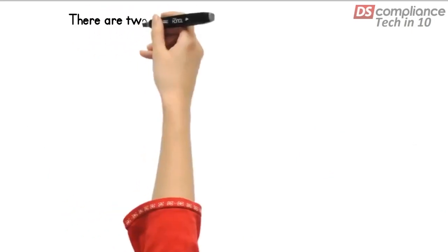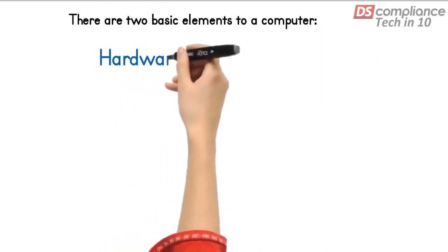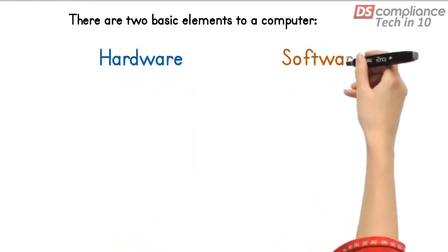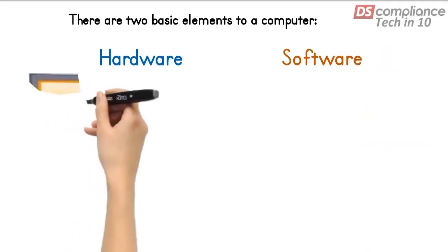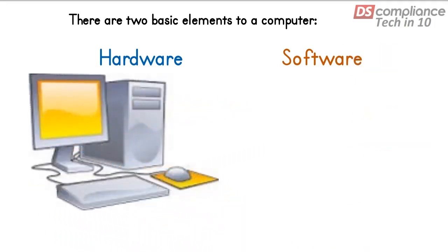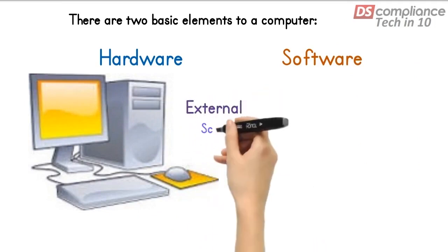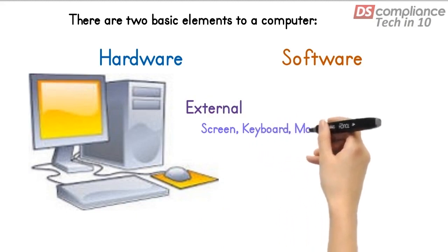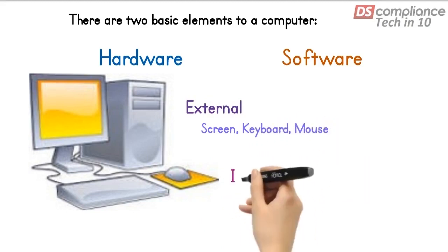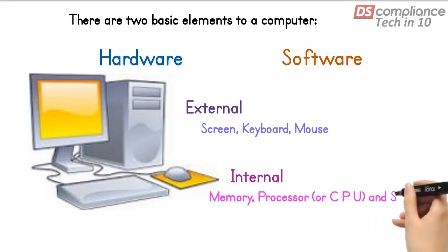A computer system consists basically of two elements in order to be able to operate: hardware and software. Let's focus on hardware for now. Hardware comprises the physical components of a computer, and these can be split into two types: external, such as the screen, keyboard and mouse, and internal components like the processor, or CPU, memory and disk storage.